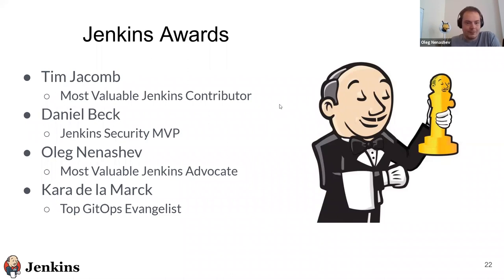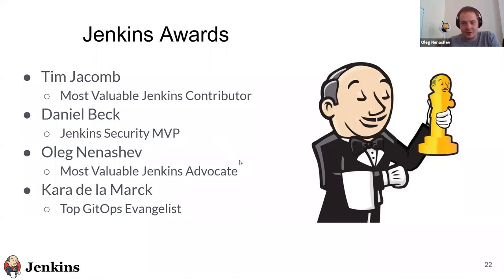Most valuable Jenkins Advocate — that's me. I can share updates later; I won't praise myself. And what I would like to say is that Cara Delamarque, currently the leader of the Jenkins Cloud Native SIG, became a top GitOps evangelist. Cara is one of the top promoters of GitOps and also for secrets management and GitOps. Congrats Cara.